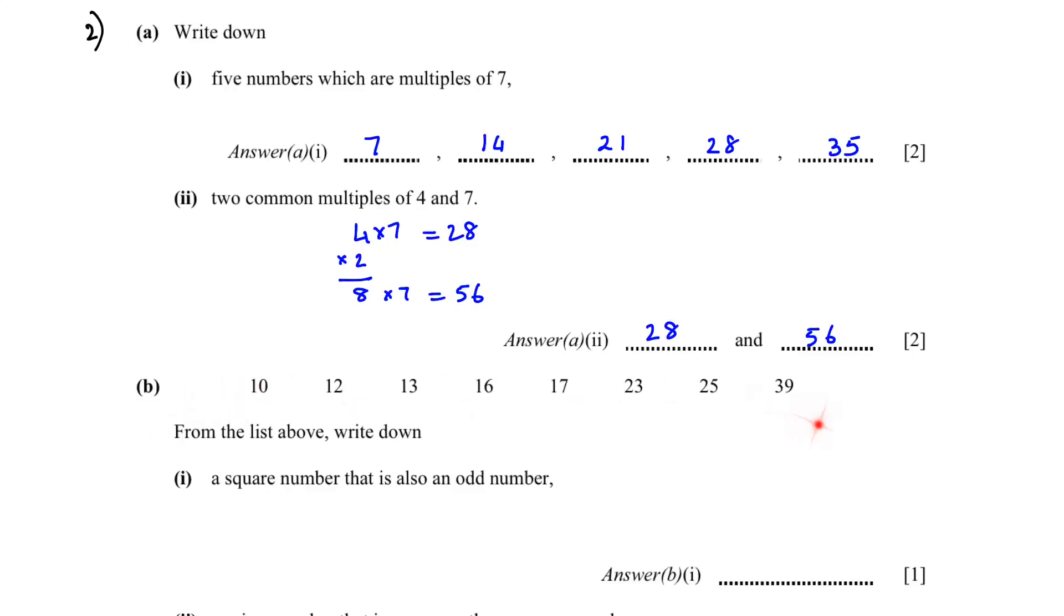In B we have been given a bunch of numbers, and from the list above we have to write down a square number that is also an odd number. We can see that the square numbers here are 16 and 25. So 25 is your odd number and a square number.